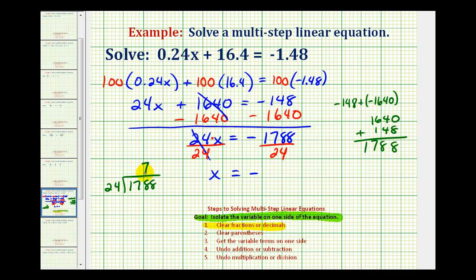And that would be seven. Seven times four is twenty-eight, carry a two. Seven times two is fourteen, plus two is sixteen. This difference is ten. Ten is less than twenty-four, so we know the seven is correct.